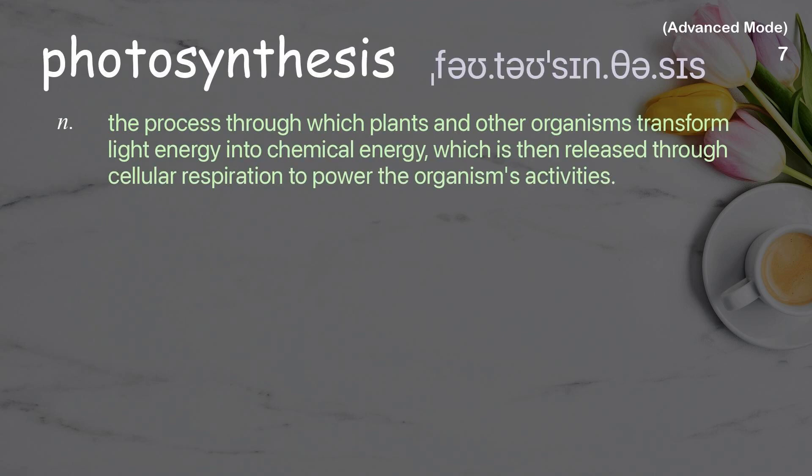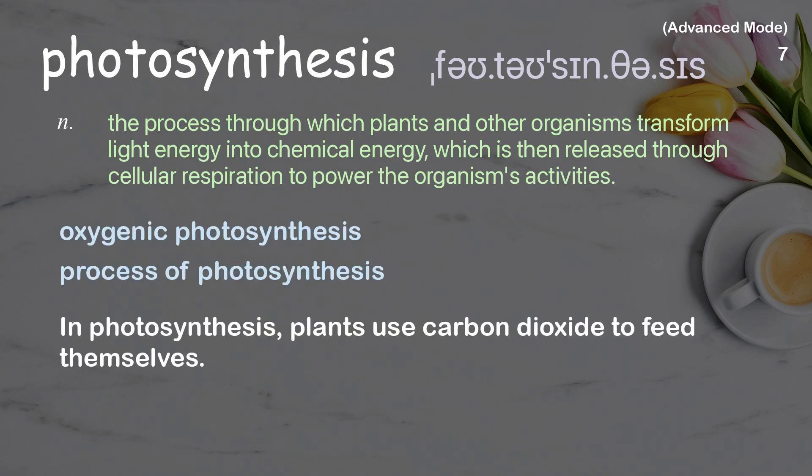Photosynthesis: The process through which plants and other organisms transform light energy into chemical energy, which is then released through cellular respiration to power the organism's activities. Examples: Oxygenic Photosynthesis, Process of Photosynthesis. In photosynthesis, plants use carbon dioxide to feed themselves.